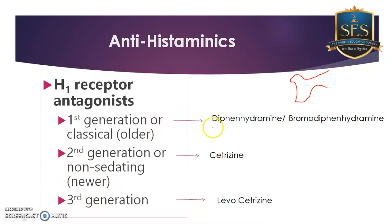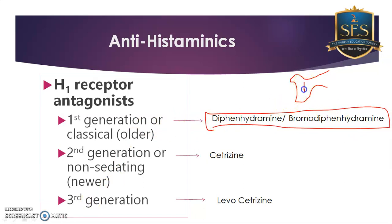To simplify with examples: first generation antihistamines blocking the H1 receptor include diphenhydramine and chlorpheniramine. Even today, cough syrups contain diphenhydramine, bromodiphenhydramine, and chlorpheniramine. One major drawback of first generation drugs is that they induce sedation — which is why cough syrups carry the instruction: do not take this medicine while driving.